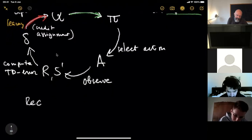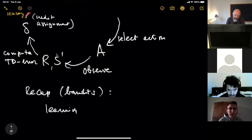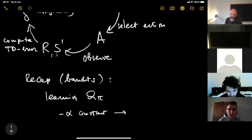We've been looking in detail at what happens when working with bandits — the simplest situation in which you don't have any states. Learning the Q value of a given policy is a very straightforward process. If alpha is constant, your algorithm simply computes a recency-weighted average of your rewards for each arm. The algorithm reads: your new estimate is your previous one plus alpha times the difference between the obtained reward and the previous estimate. This is a correcting algorithm amounting to a geometrically recency-weighted average.